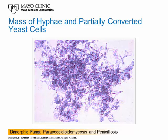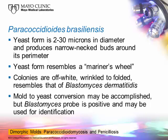This image shows a mass of hyphae and partially converted yeast cells — some round cells among pieces of hyphae, rather nondescript. Once you convert to the yeast form, you see yeast cells 2 to 30 microns in size that produce narrow-necked buds all the way around the perimeter — what we call a mariner's wheel, like on a boat. The colonies are off-white, wrinkled, and folded. Additionally, a commercially available Blastomyces probe can be used to help identify paracoccidioides, because the Blastomyces probe cross-reacts with paracoccidioides, which we see as an advantage.